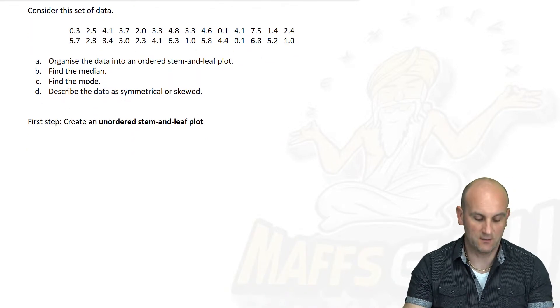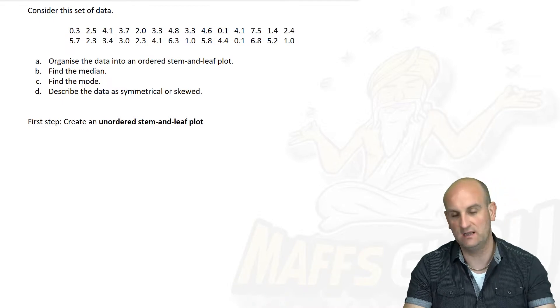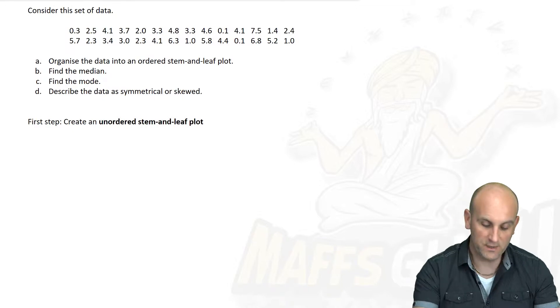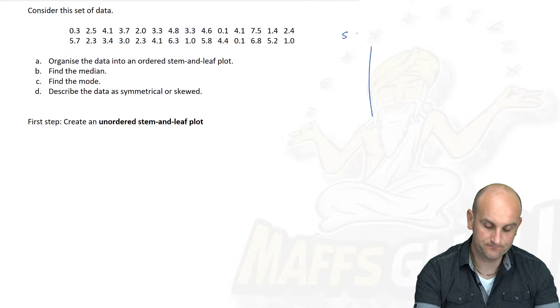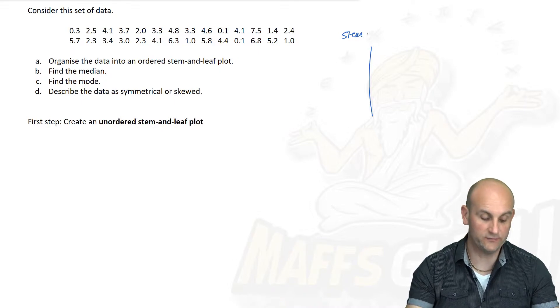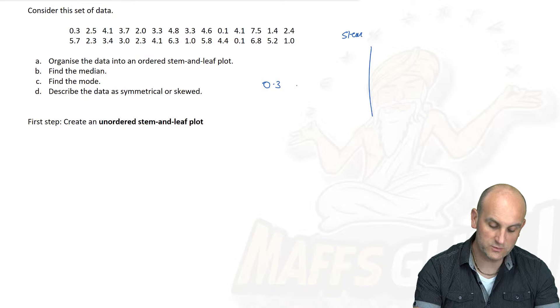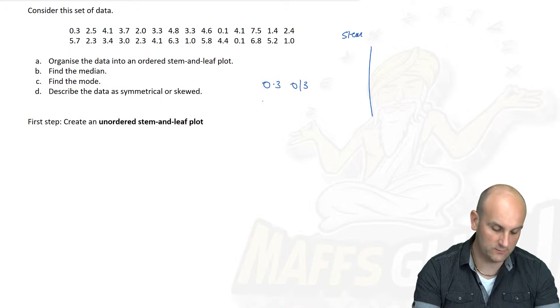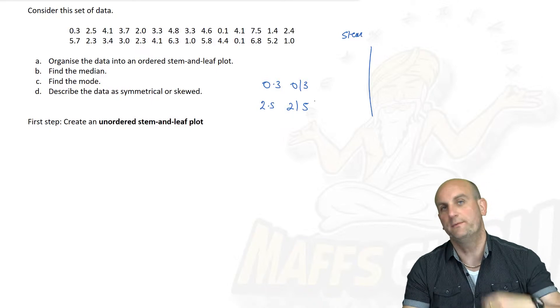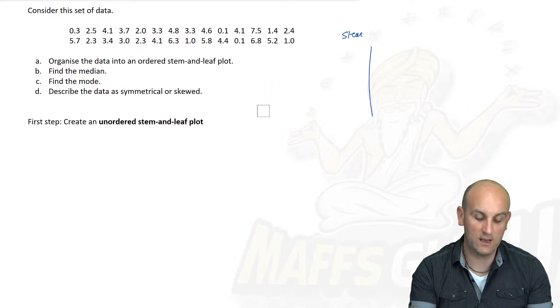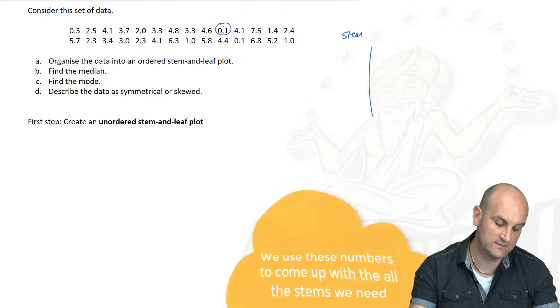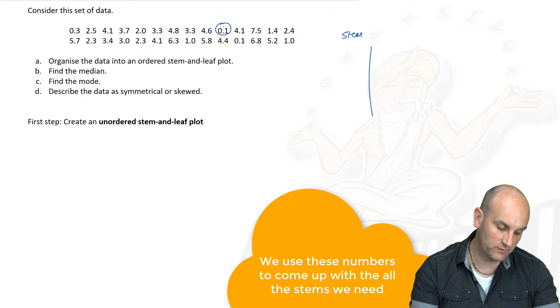It says consider this set of data, all decimals. Organize the data into an ordered Stem and Leaf Plot. To be able to do this we need to answer a number of questions. Firstly what numbers are going to go in my Stem? We need to look for our lowest number and our highest number in our data set. The lowest number seems to be 0.1. Highest number I've got is 7.5.